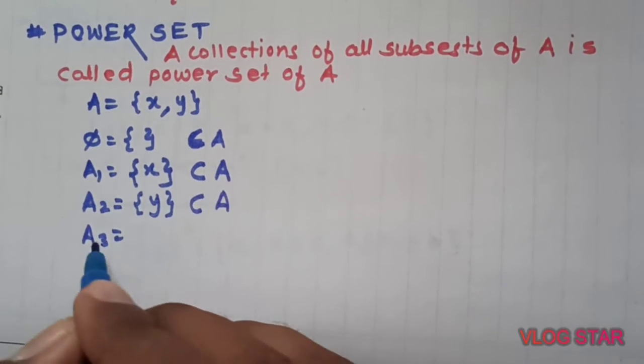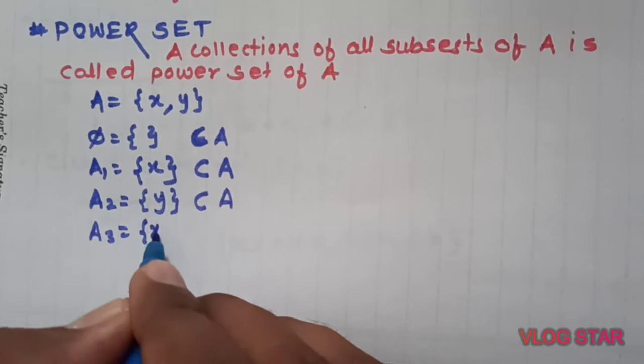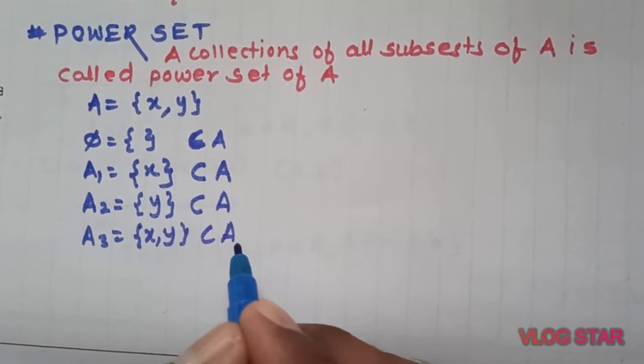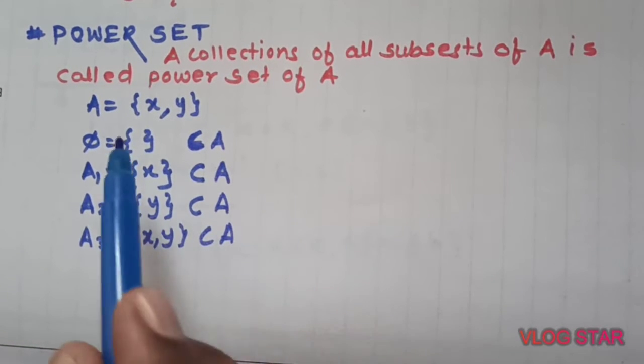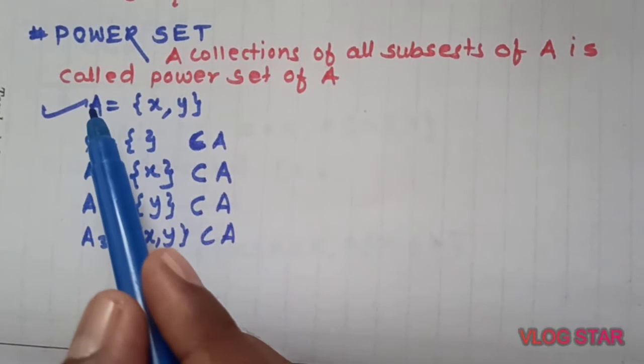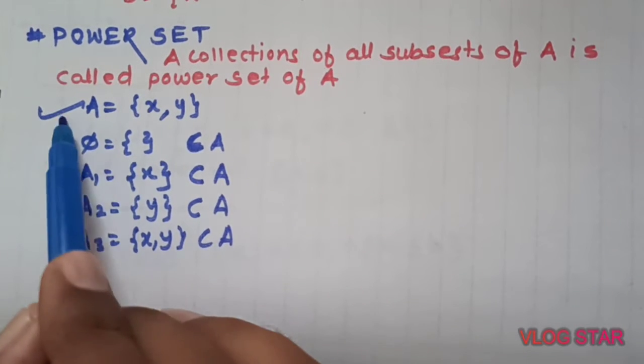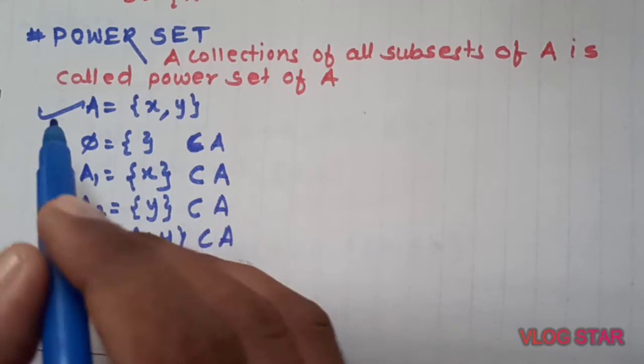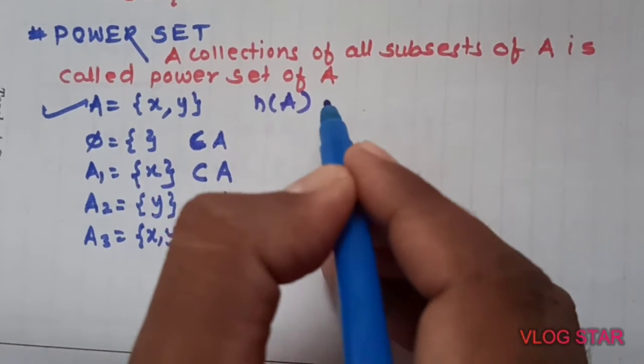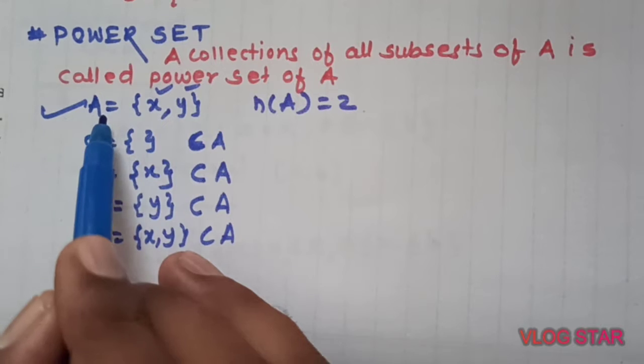We can make another subset A2. This time we take y, a singleton set, which means a set containing only one element. A2 contains only y, so y is a member of A, and this is a subset of A.